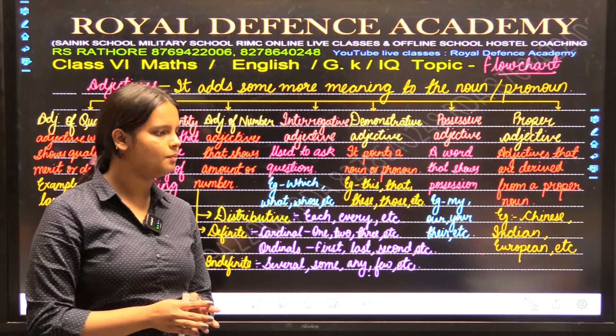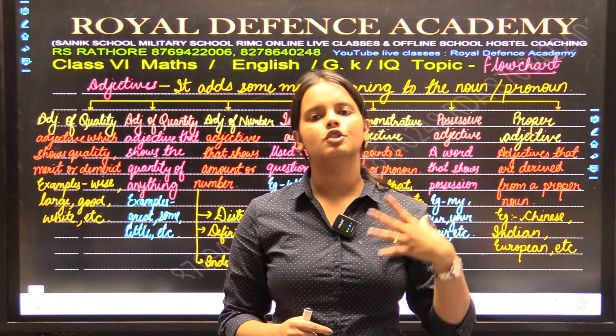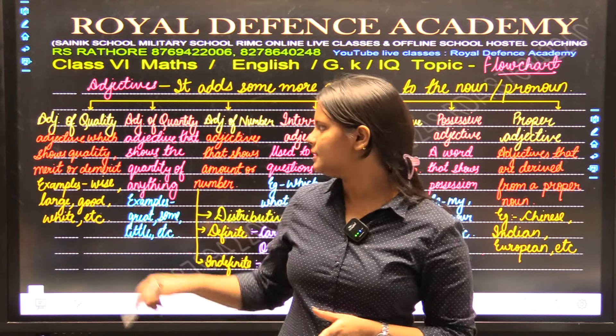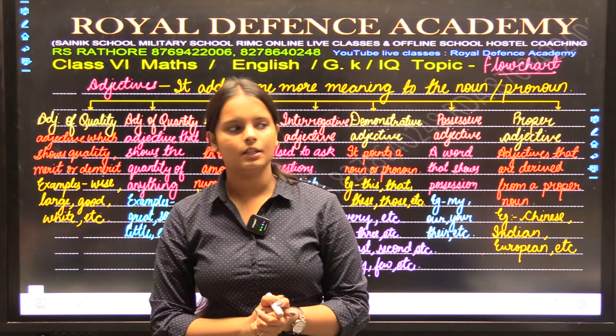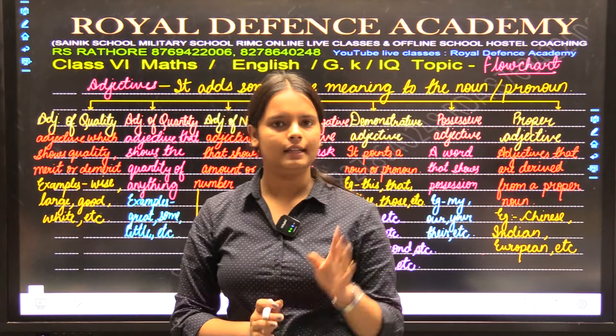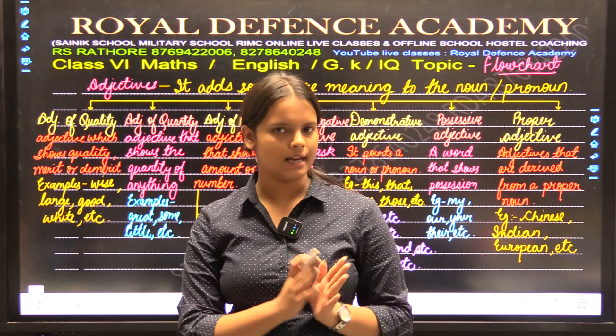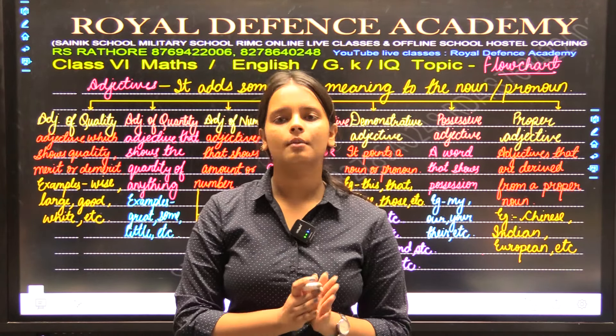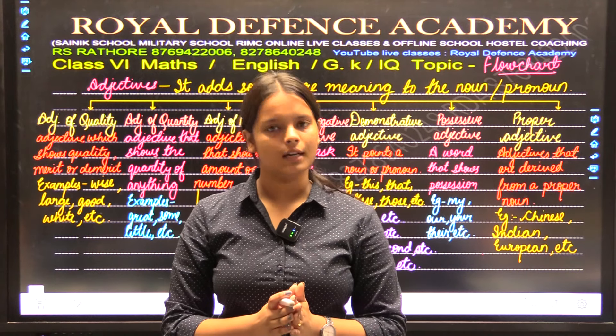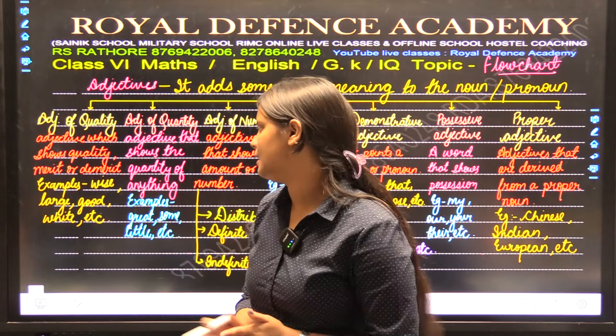First is adjective of quality. Quality deals with materialistic things — how a body is looking, what are the basic proportions of the body, how does it look. Adjective of quality deals with the qualities, merits (positive qualities) and demerits (negative qualities). When we talk about a noun or pronoun and tell the quality of it, it is adjective of quality.